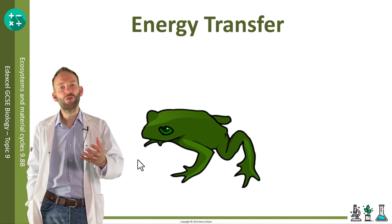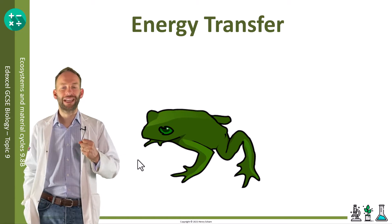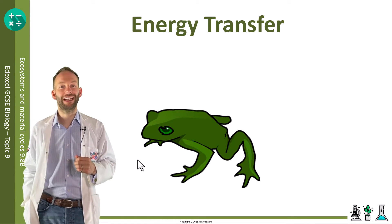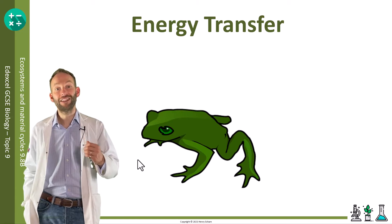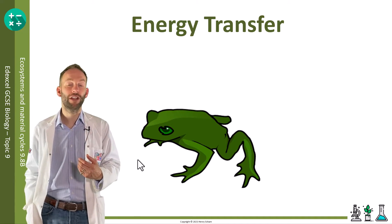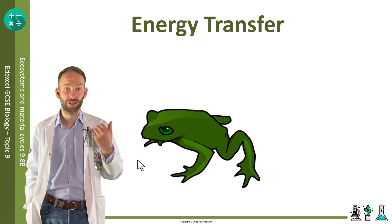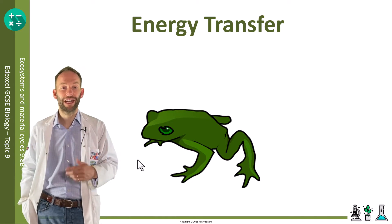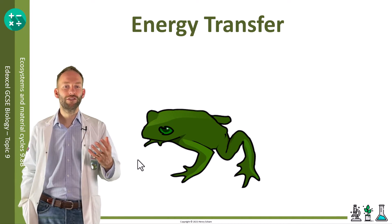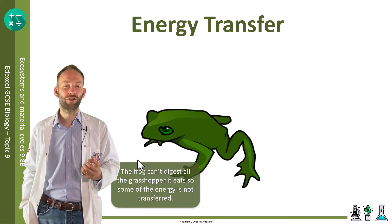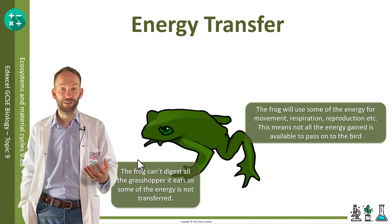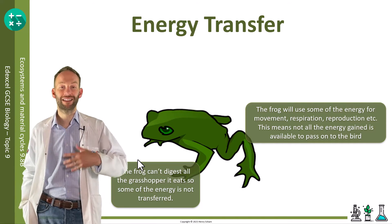Not all the energy is stored as new biomass and is therefore not transferred to the next trophic level. The energy is actually lost from the food chain as the organism uses it up for life processes such as movement, respiration, and reproduction. This frog, for example, is not going to be able to digest all of the grasshopper it eats, so some of the energy is not transferred.